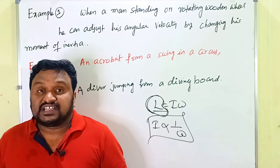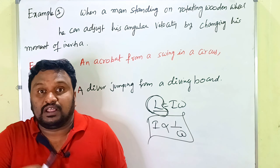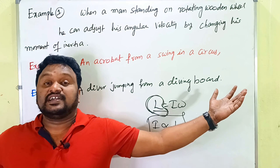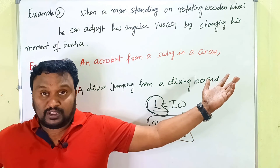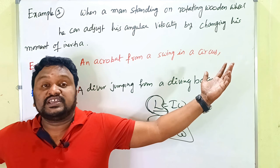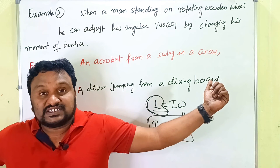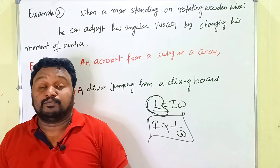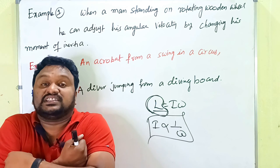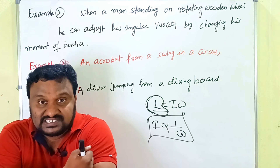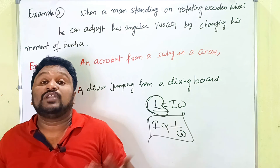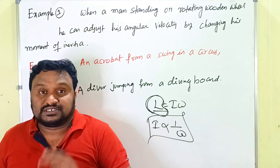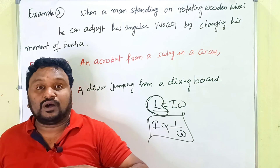The first example: when a person is standing on a rotating wooden wheel, to decrease his angular velocity he can stretch his hands. When he stretches his hands, his moment of inertia increases and angular velocity decreases. If he wants to increase his speed, he folds his hands close to the body — moment of inertia decreases and angular velocity increases.